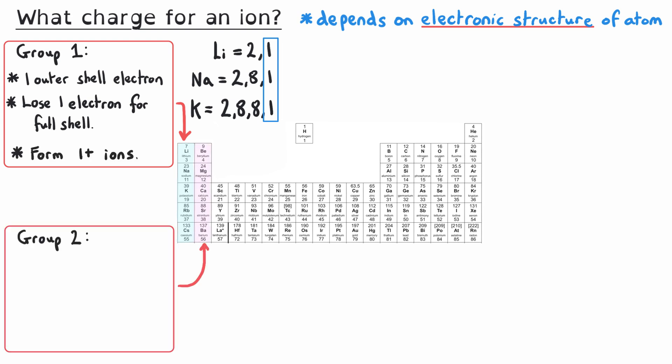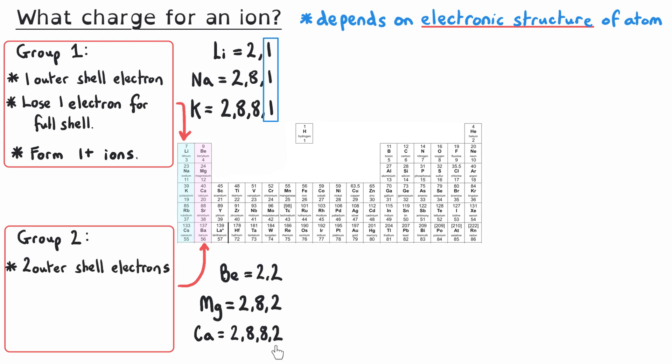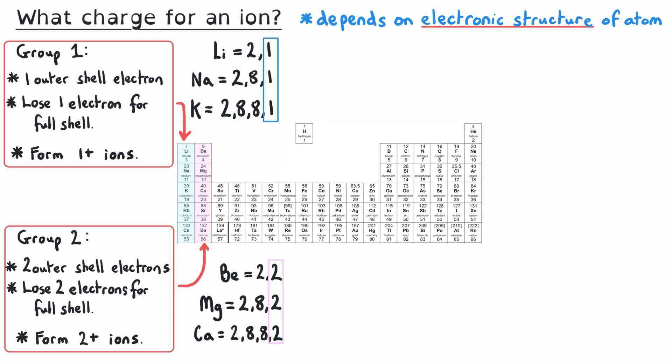The group 2 elements also have very few electrons in their outer shell — their electronic structures show they all have two electrons in the outer shell, for instance beryllium and magnesium. So to fill their outer shell, they lose those two negative electrons from their outermost occupied shell, which means group 2 atoms become 2+ ions.